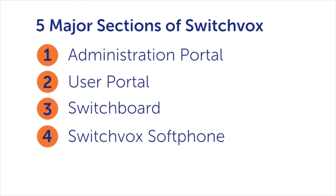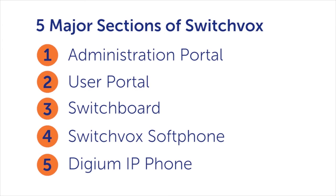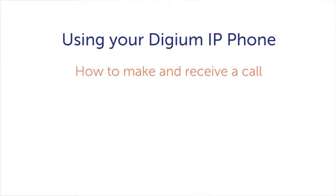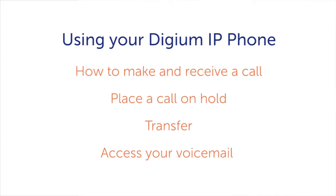The Switchbox soft phone for iOS and Android can give you complete call control and allow you to manage your extension from your smartphone. And finally, your Digium IP phone will bring you more options to your desk phone than you've ever had before. Since there is so much that Switchbox can do, it can be very overwhelming to learn everything at once. The Switchbox Basic videos will show you how to use a few features that people use the most to help you get started quickly. For most people it's most important that they learn how to use their new desk phone, so let's show you how to make and receive a call, place a call on hold, transfer, and access your voicemail using your new Digium phone.